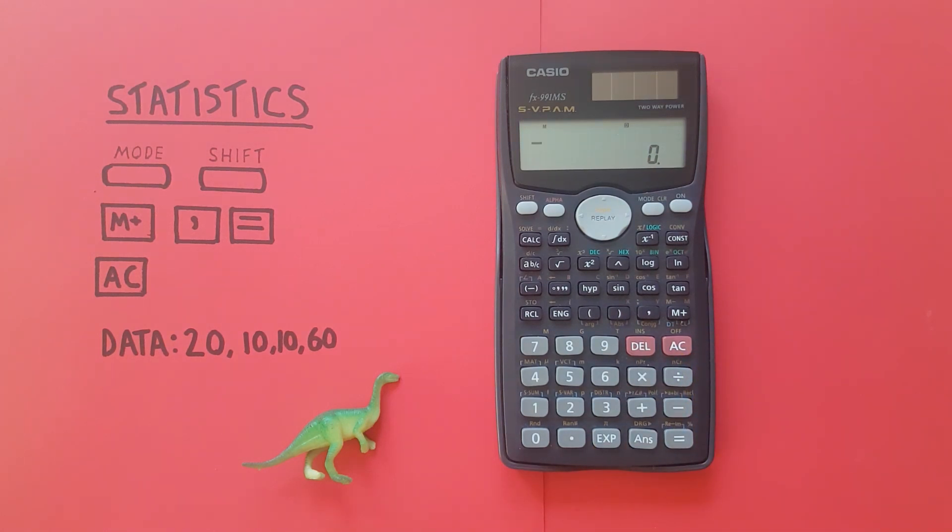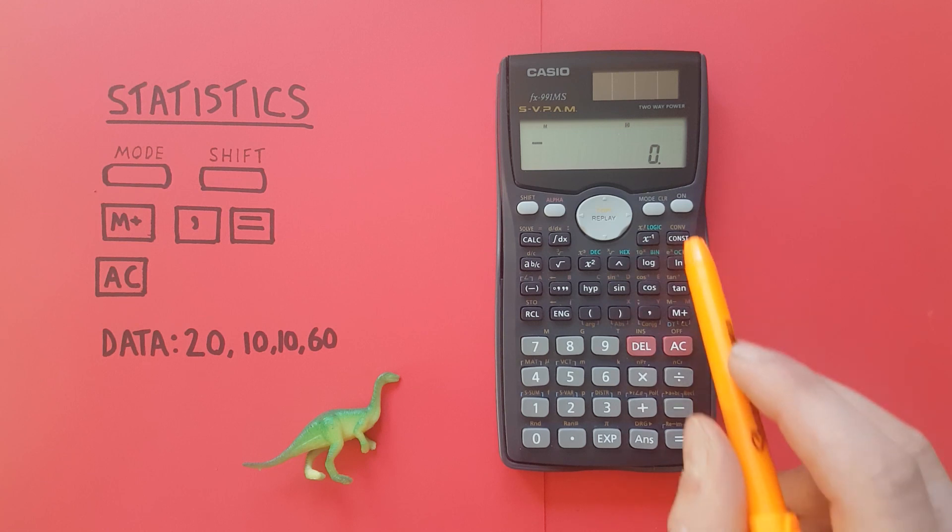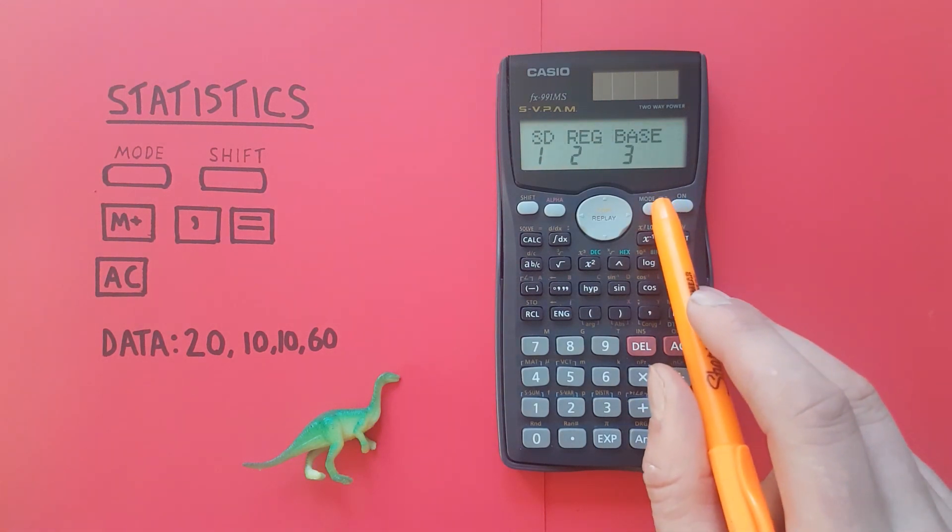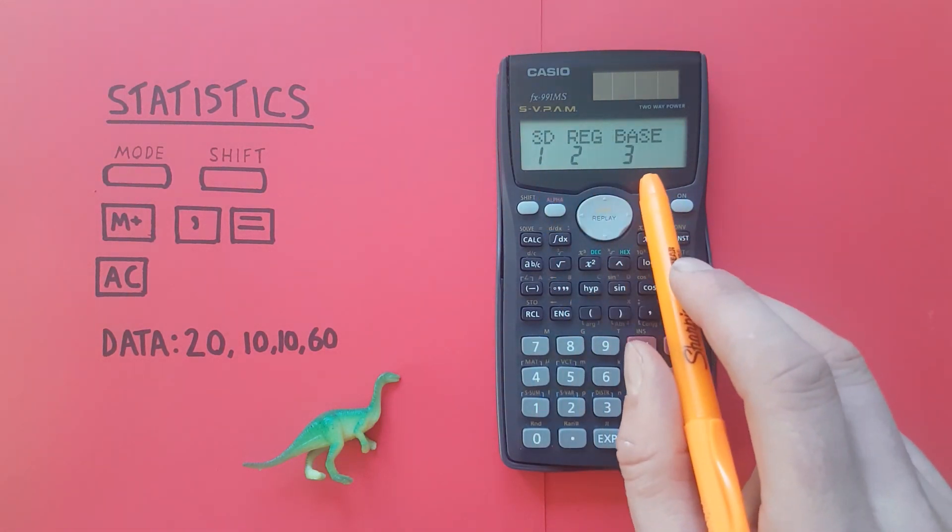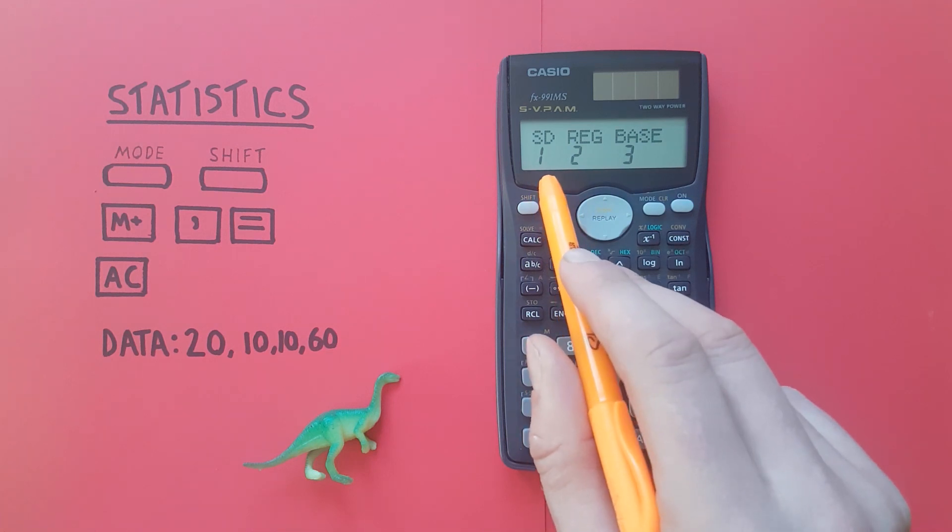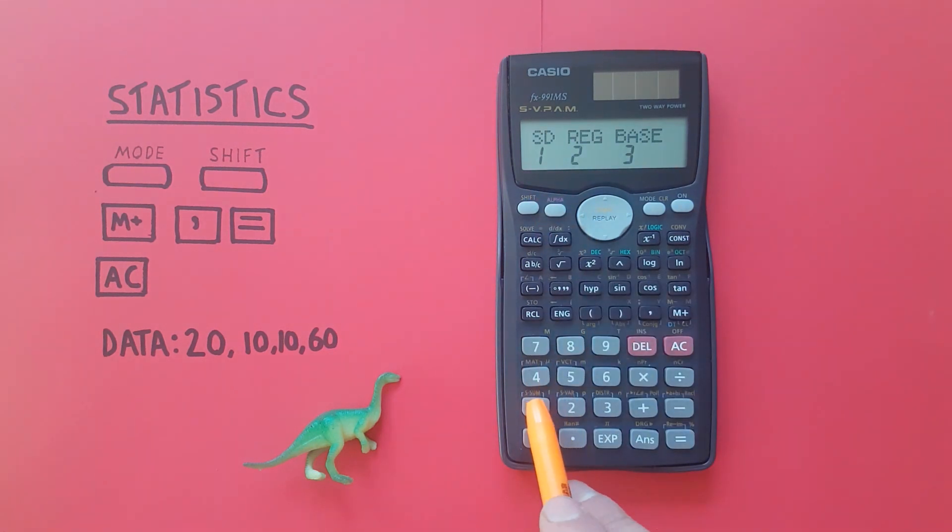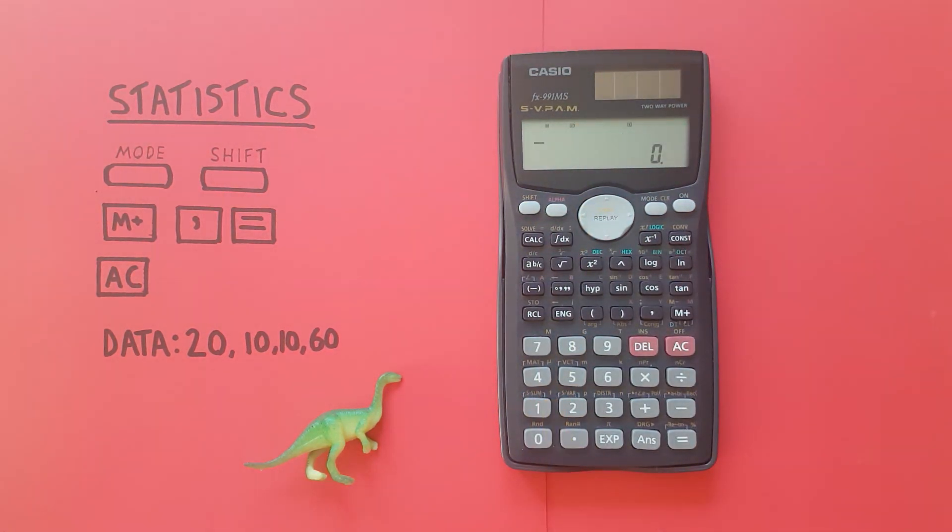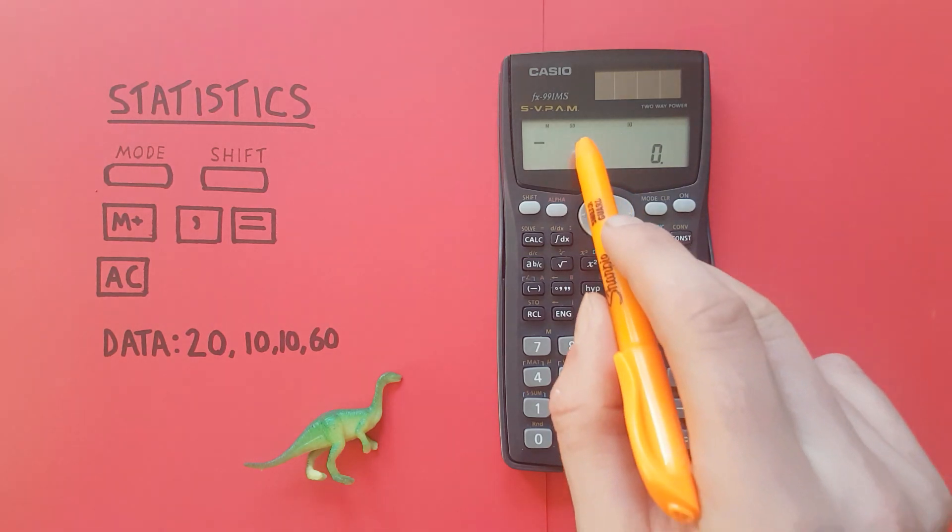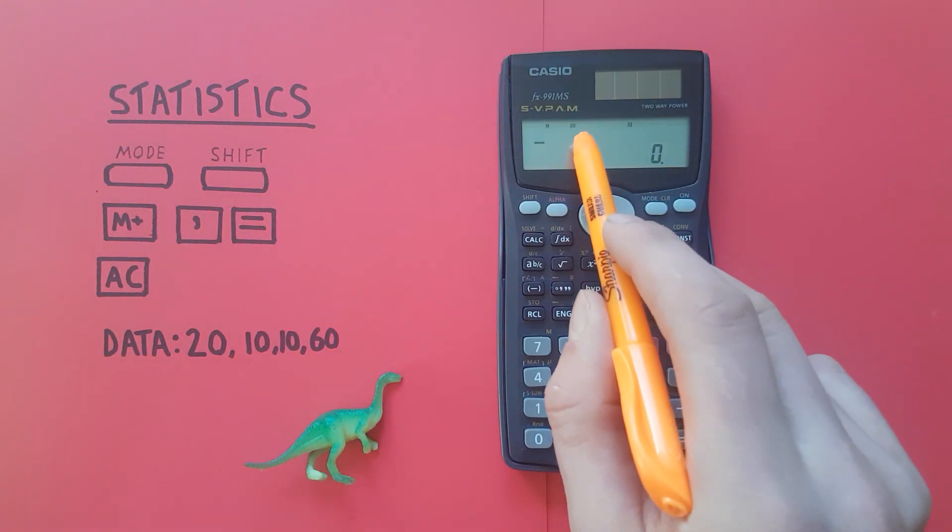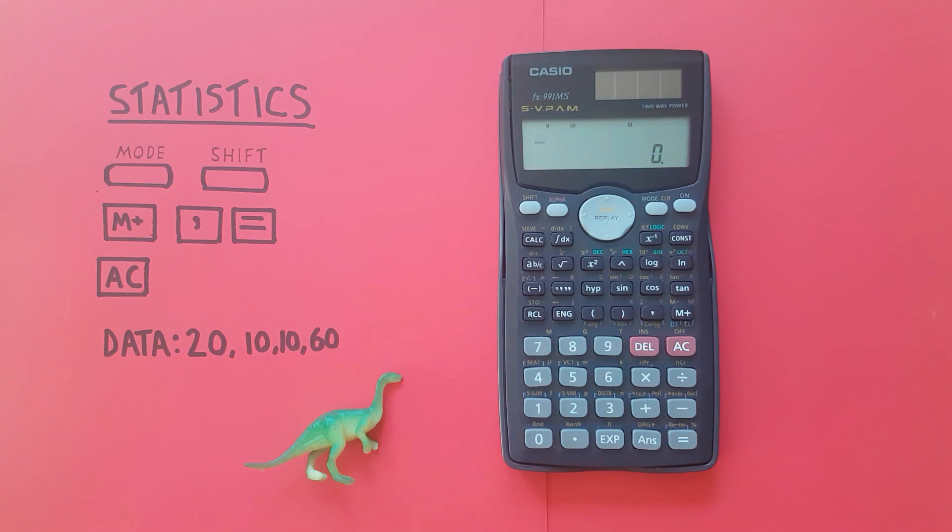Now the first thing we want to do when doing statistics on our calculator is put it into statistics mode. To do that we press the mode key twice until we get to this menu and the option we want is number one SD. So we press one. You can now see an SD in the top of the screen there. That lets us know we're in statistics mode and good to go.